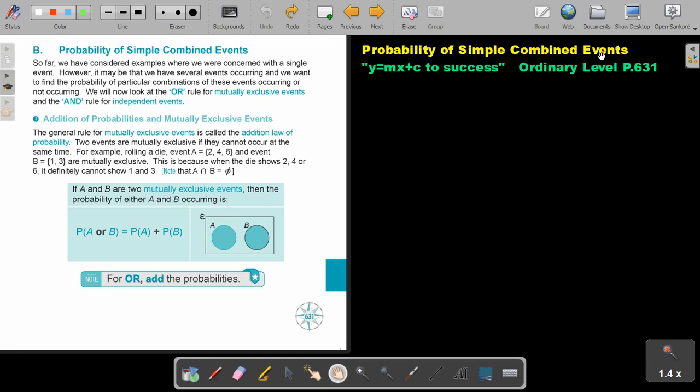Probability of simple combined events. You will find this on page 631 in the Namibia Ordinary Level Mathematics textbook Y equals MX plus C to success. So far, we have considered examples where we were concerned with a single event. You can go through the grade 9 videos to revise probability of simple single events. However, it may be that we have several events occurring and we want to find the probability of particular combinations of these events occurring or not occurring. We will now look at the OR rule for mutually exclusive events and the AND rule for independent events.